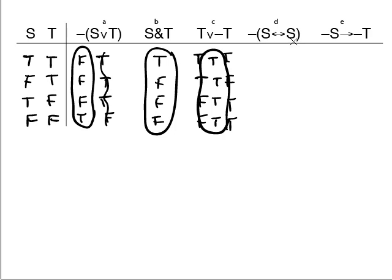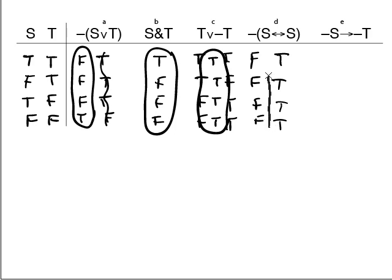S double-arrow S, and then negate it. When we compare S double-arrow S, we're comparing S to itself. The rule for the double arrow is that it's true when both sides are the same. True to true must be true; false to false must be true — so we get true, true, true, true. Now we negate that, giving us false, false, false, false. Circle it.